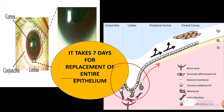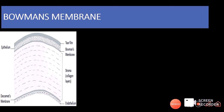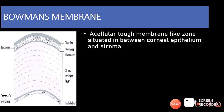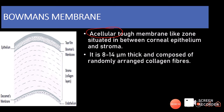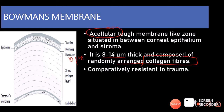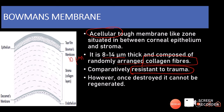Now let us talk about Bowman's membrane. Bowman's membrane is an acellular, tough membrane situated between the corneal epithelium and the stroma. It is about 8 to 14 micrometers thick — remember it as about 10 micrometers — and is composed of randomly arranged collagen fibers. Many people consider it a condensation of the anterior stroma. It is comparatively resistant, but if it does get destroyed, it cannot be regenerated.